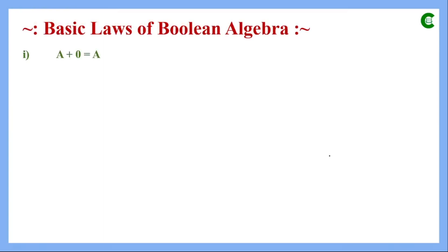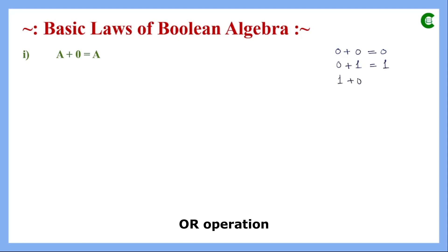The first law is a plus 0 equals a, where a is the Boolean variable and 0 is the Boolean constant. Before learning these laws, we learn four basic OR operations using Boolean constants: 0+0=0, 0+1=1, 1+0=1, and 1+1=1. Keeping these four basic operations in mind, we will learn the basic laws of Boolean algebra.